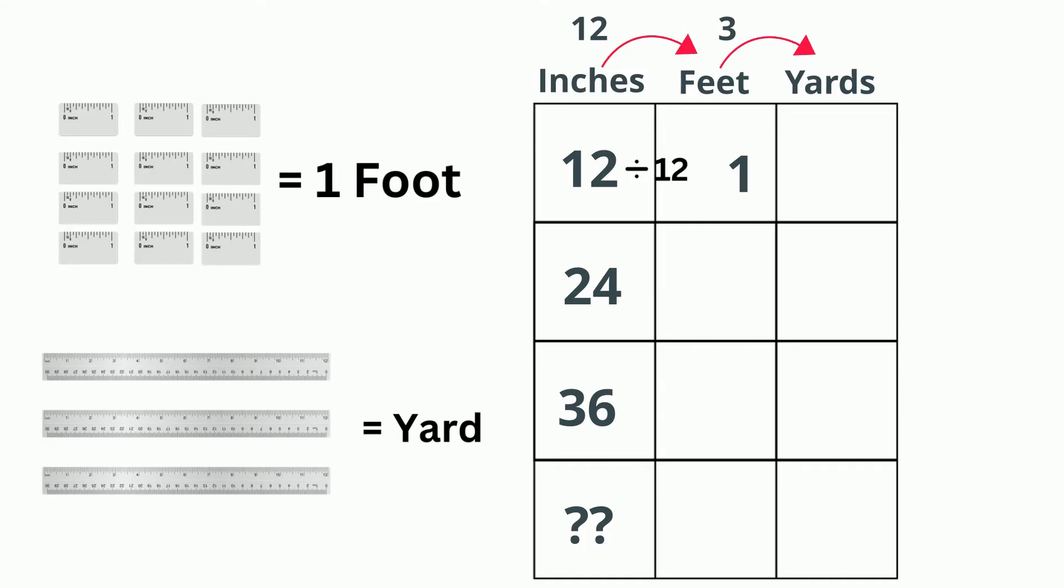Now how about 24 inches? Well, let's do the same thing. 24 divided by 12, and that equals 2 feet. So we have a pattern. To get the feet, we just divide the inches by 12. So now for 36 inches, we just divide by 12, and that equals 3 feet.